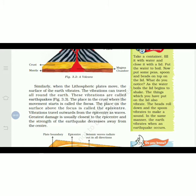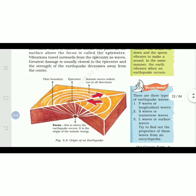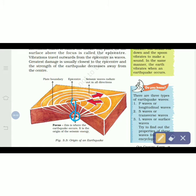The place in the crust where the movement starts is called the focus. The place on the surface above the focus is called the epicenter. Vibration travels outward from the epicenter as waves. Greatest damage is usually closest to the epicenter, and the strength of the earthquake decreases away from the center. You can see the diagram — the vibration starts at the focus and spreads in a circular motion outward from both the focus and the epicenter.